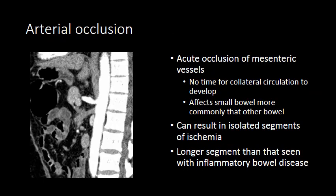The first etiology that often comes to mind is arterial occlusion. If a vessel becomes acutely thrombosed — such as from a left ventricular thrombus ejected from the heart or other embolic phenomenon — there is no time for the body to compensate through collateral circulation, and the bowel will become acutely ischemic. This contrasts with stenosis, which occurs slowly over time, allowing the body to compensate via the celiac axis or inferior mesenteric artery.